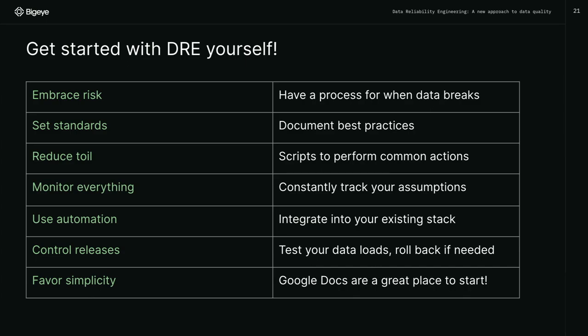Set the standards — going back to that communication, document your best practices. Work with your stakeholders, work with the rest of your team. What are the right practices for your organization? How do you create standards that the data team will follow, both the producers and the consumers and the end users in the business? Reduce toil — this is where we get into the actual engineering parts. You can run scripts to perform common actions. Instead of writing a Slack message by hand every time, write a little bash script with a command line tool that takes a table name and automatically writes the Slack message and sends it to the right channels. I reduced some toil.